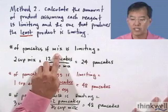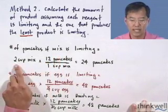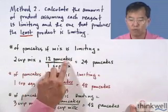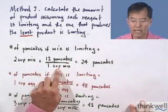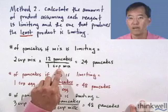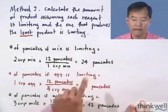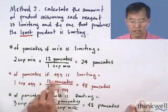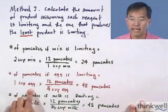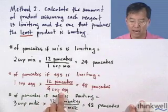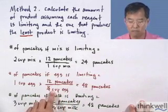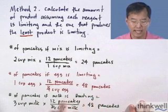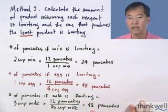The number of pancakes you could make if pancake mix were the limiting reagent: 2 cups of mix — which is what we started with in the pantry — times 12 pancakes divided by 1 cup of mix from your recipe gives 24 pancakes. If instead we calculate the number of pancakes we can make if egg is the limiting reagent: 1 cup of egg times 12 pancakes divided by one quarter cup of egg — that's the fraction from the recipe — gives 48 pancakes. Similarly, with milk we could also make 48 pancakes.